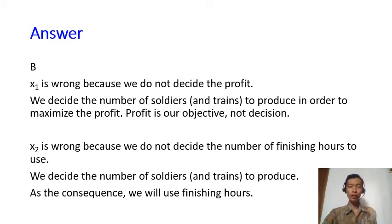x1 is wrong because we do not decide the profit. Remember that we decide how many trains and soldiers we produce. So profit is our objective, not decision. x2 is wrong because we do not decide the number of finishing hours to use. We decide how many soldiers and trains we produce such that as the consequence we will use the finishing hours. I hope this question helps you understand all the four characteristics of a linear programming problem.